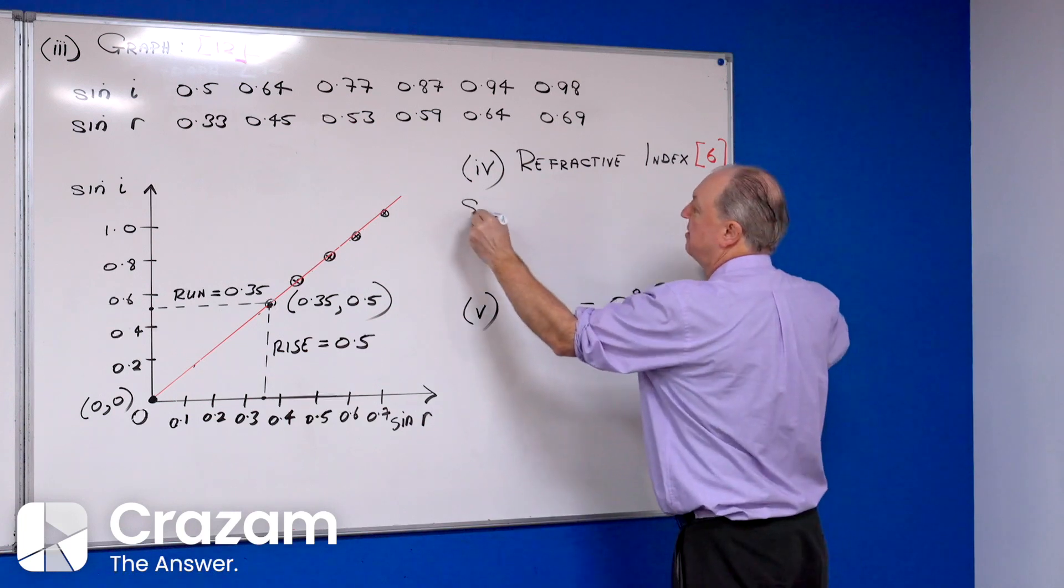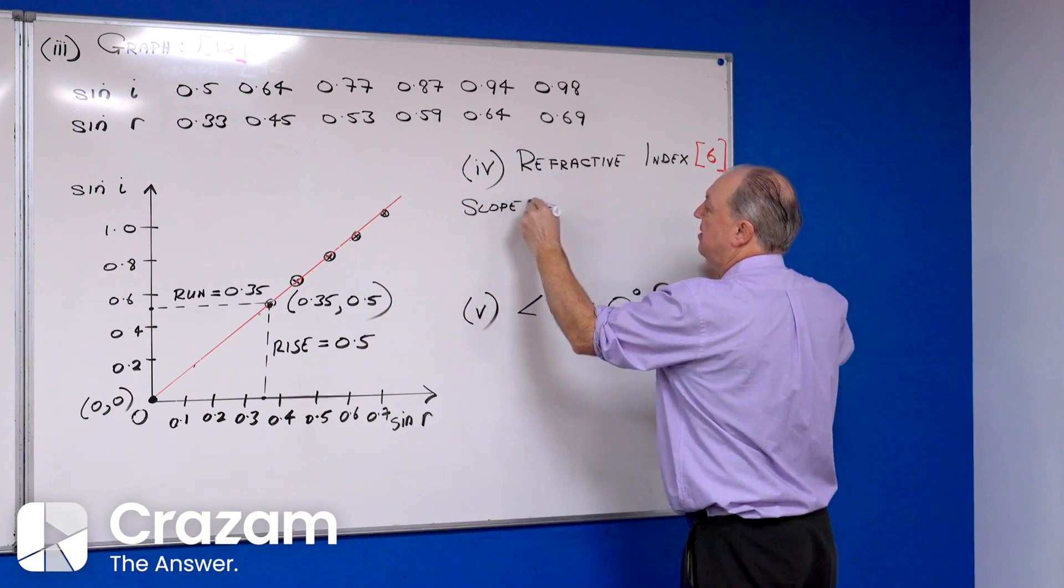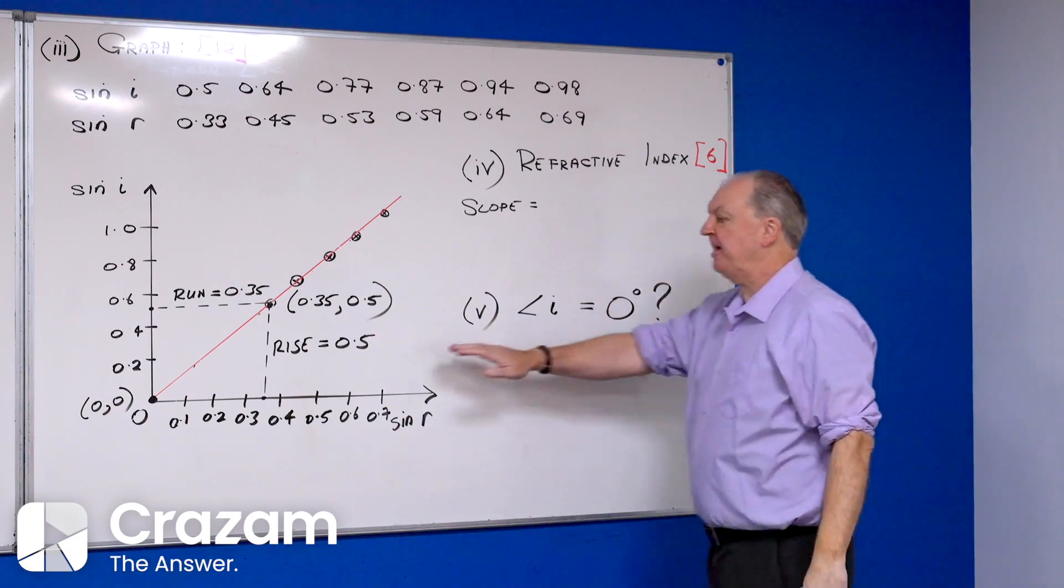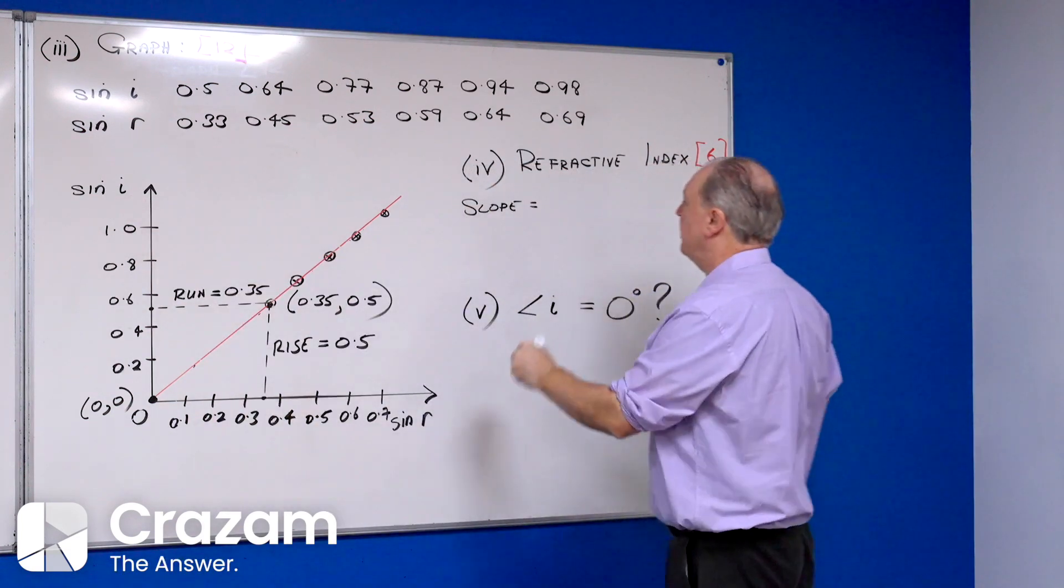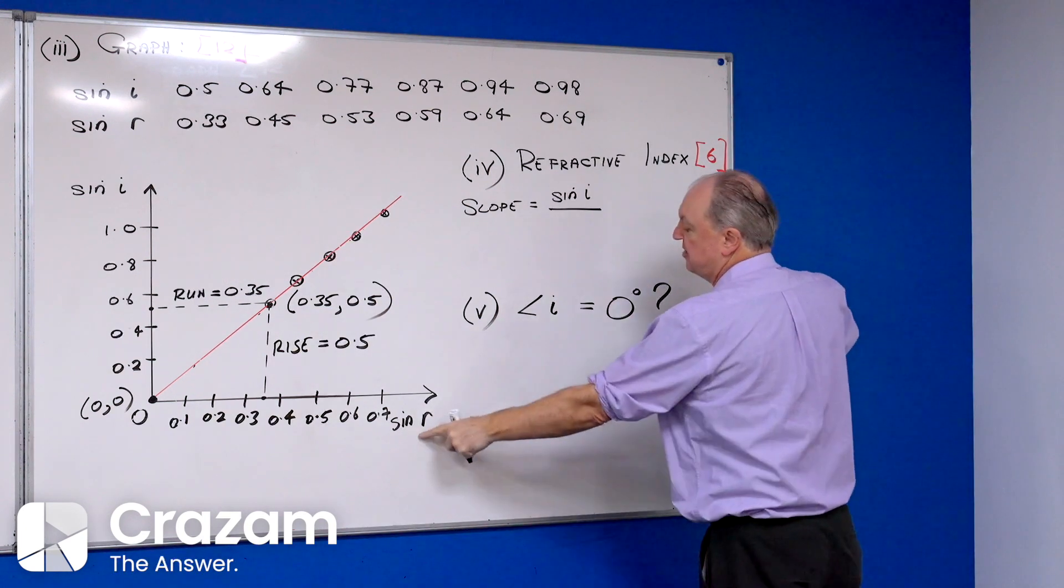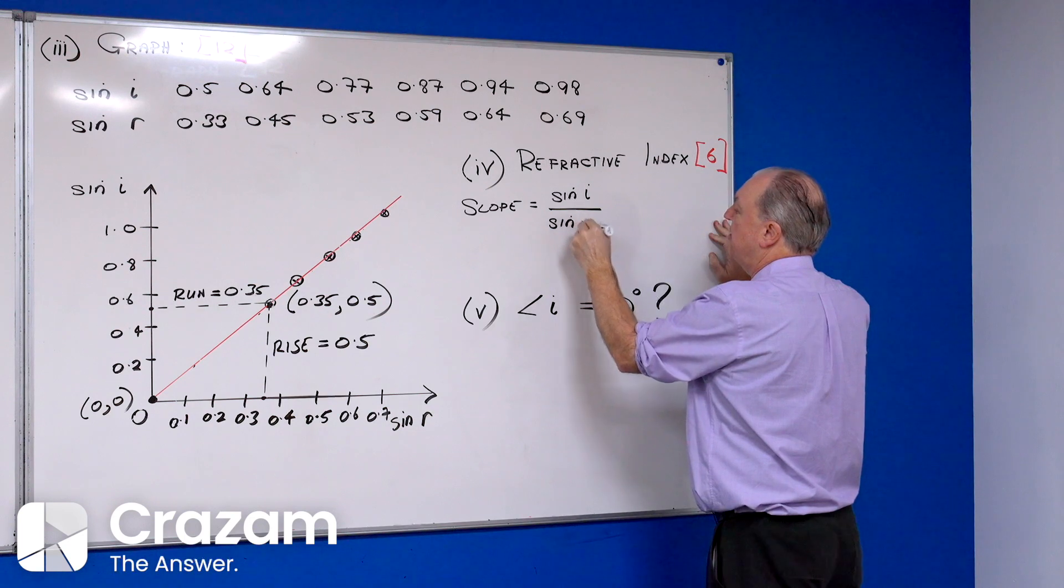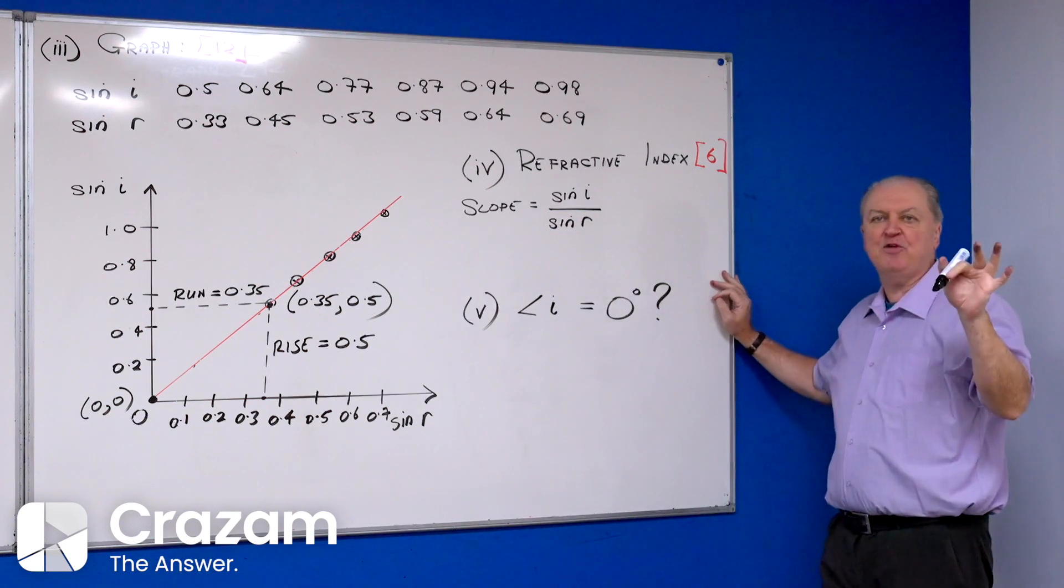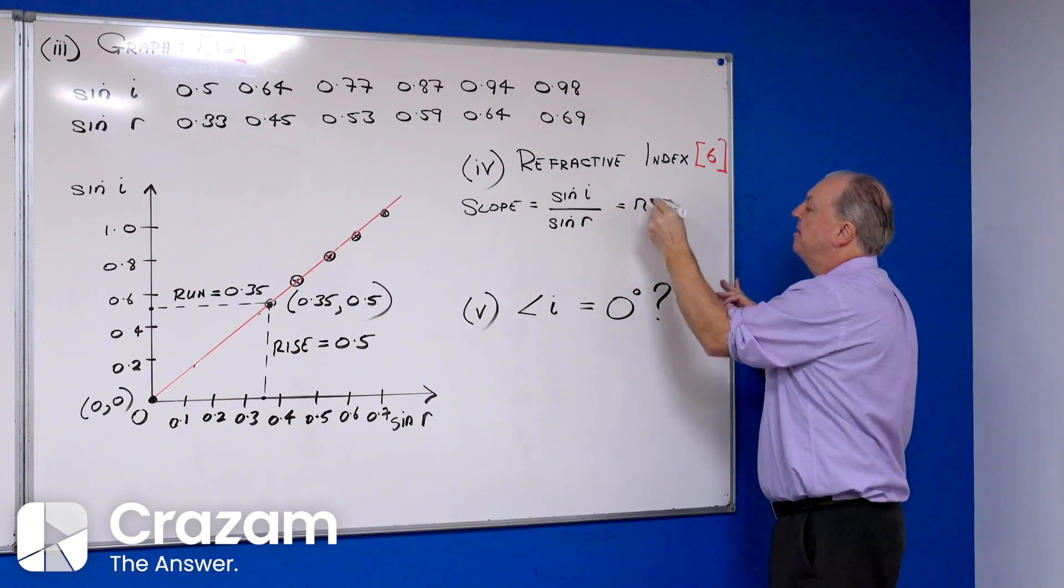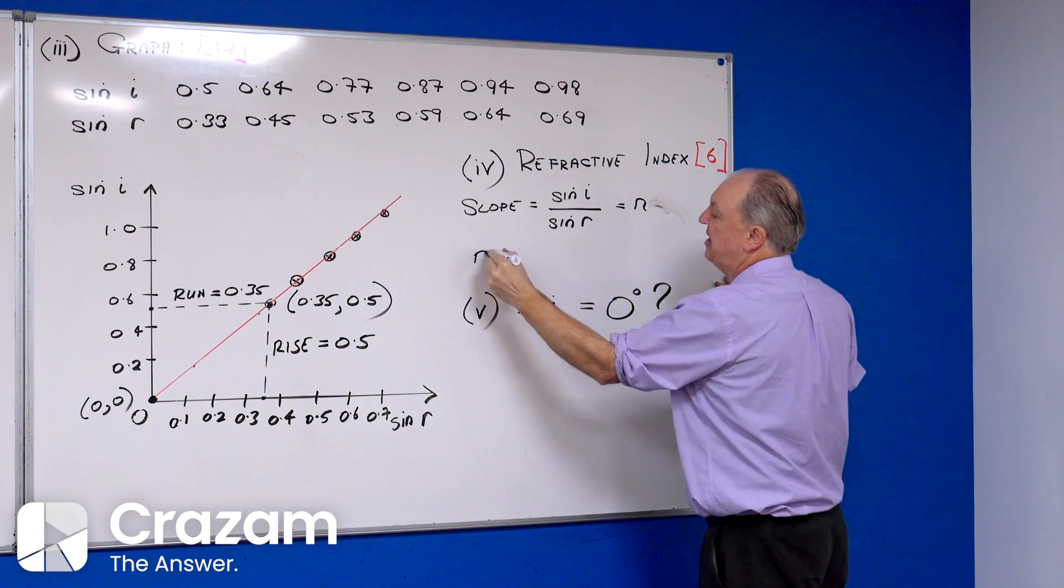Now I'm ready to work out the slope. The slope of this graph is rise over run. The rise is how high you go up, that's a value for sine i. The run is how far you go out, that's a value for sine r. The slope is the refractive index, that is equal to n.